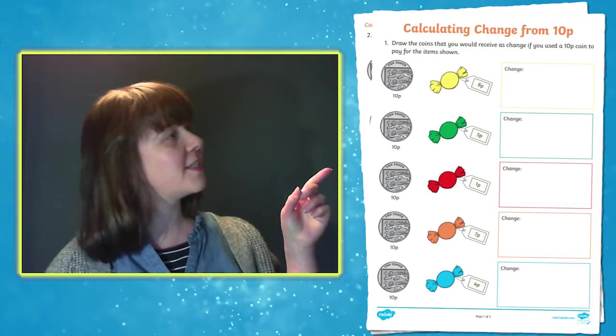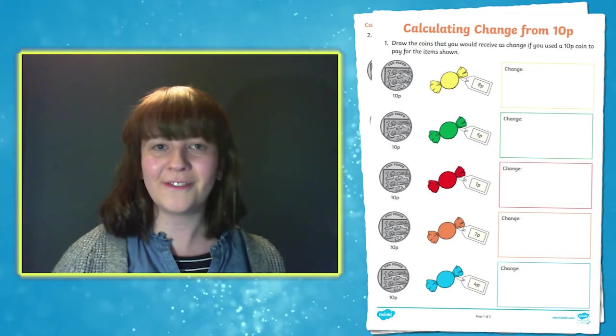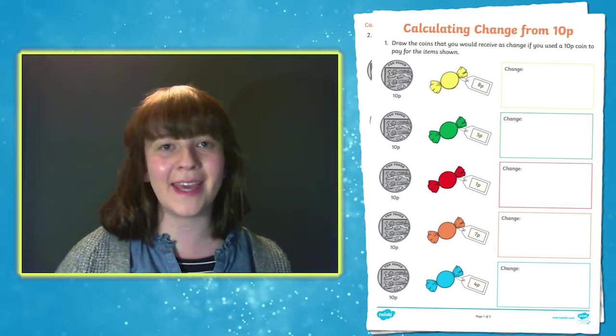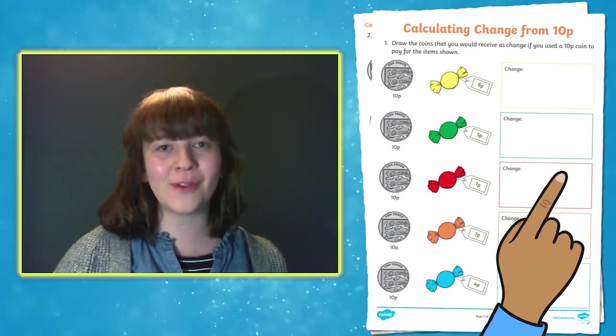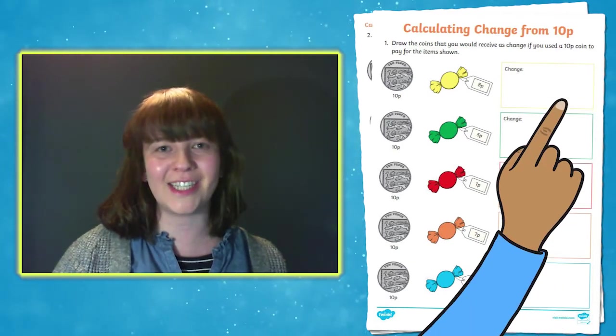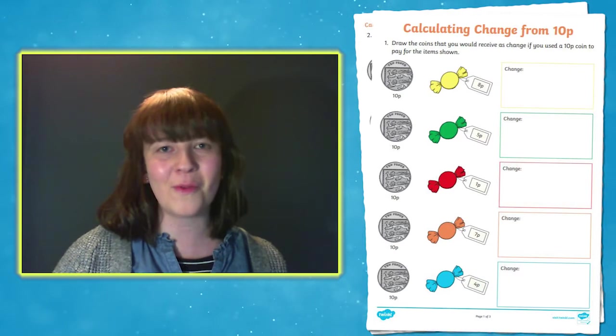The first two sets of questions ask children to find the change after buying a sweet with a 10 pence coin. They then have to draw the coins that they would give as change and remember there can be more than one answer.